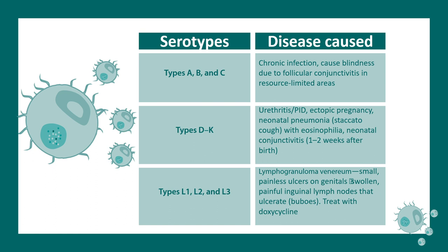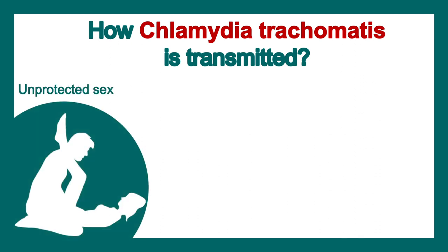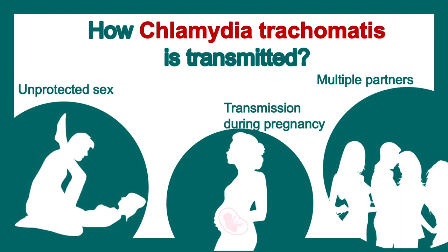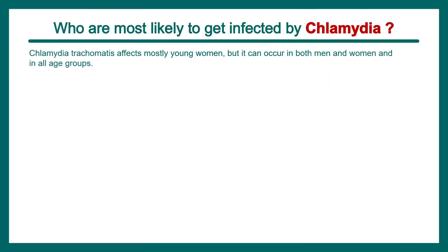These overall symptoms can be treated with antibiotics like doxycycline. Chlamydia is a sexually transmitted disease, spread through unprotected sex and multiple partners. It can also be transmitted during pregnancy or through blood transfusion.